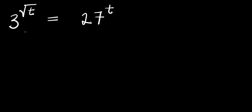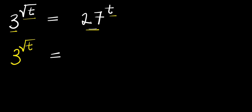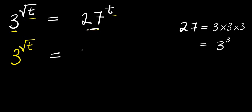Hello, how to solve this exponential problem. This is 3 power square root of t equals 27 power t. We are solving for all values of t that satisfy this equation. We have 3 power square root of t equals — for 27, remember we have 27 equals 3 times 3 times 3, and this is 3 power 3.